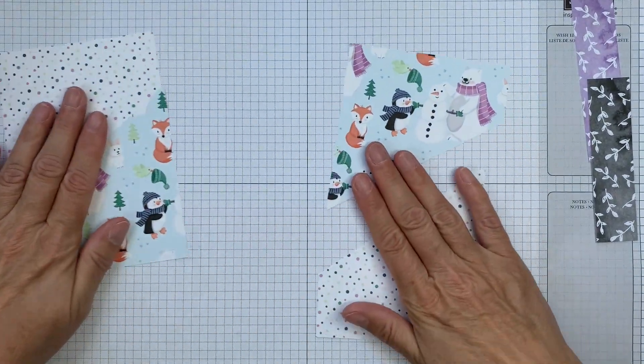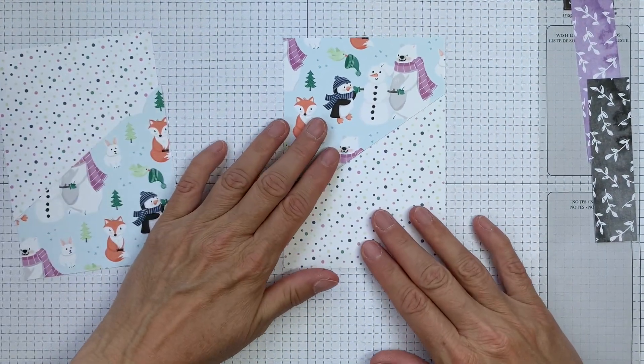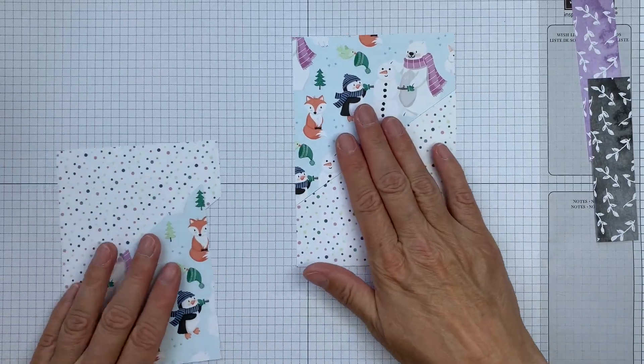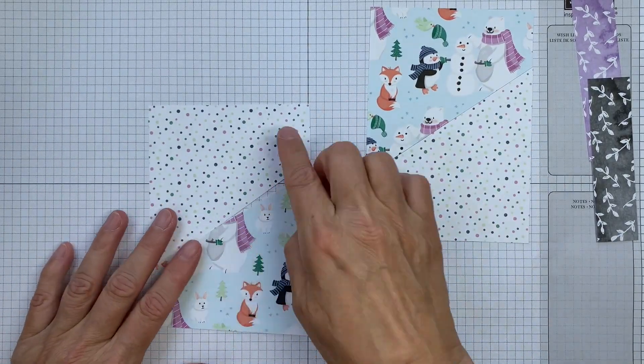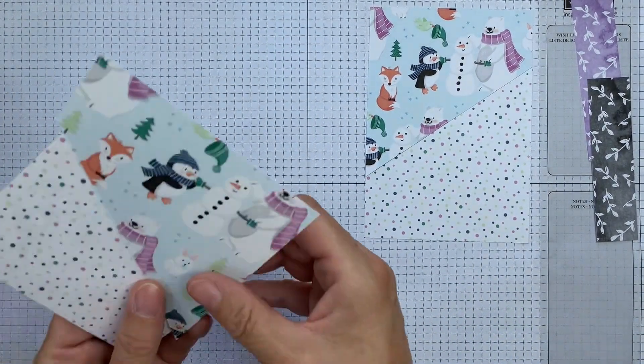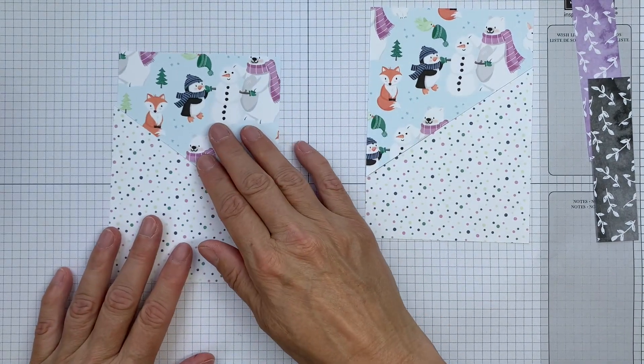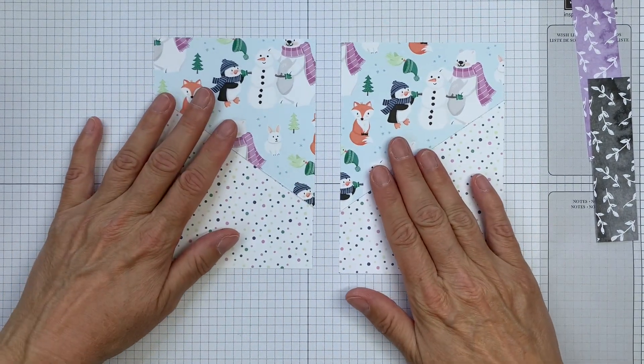Or if you don't like the fact that his head's been cut off, this polar bear here, you might have got something going over the center there anyway. But you can always flip that over and pop it on from that side.